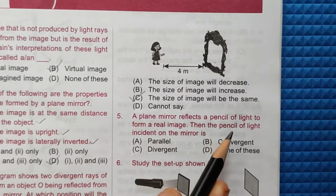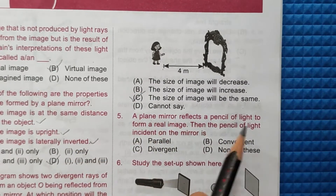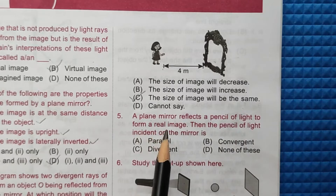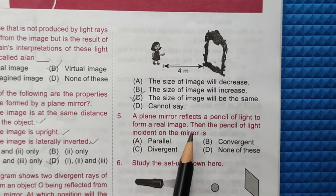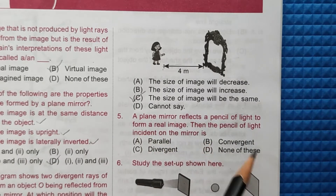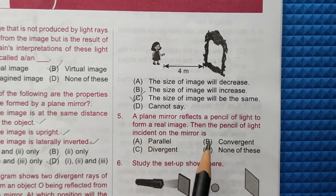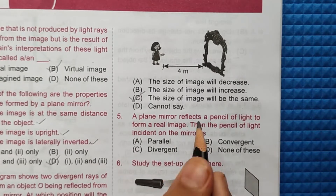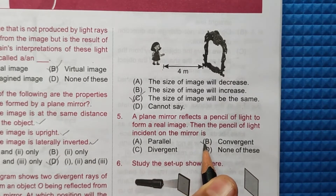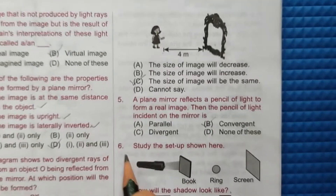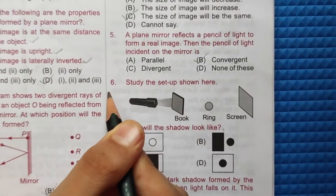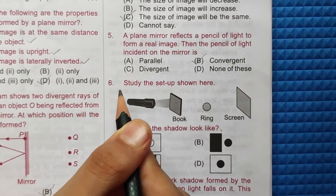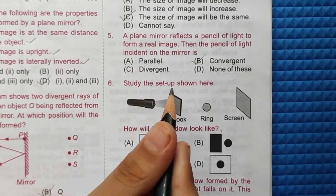Fifth question: a plane mirror reflects a pencil of light to form a real image. Then the pencil of light incident on the mirror is convergent. So the correct answer is option B.